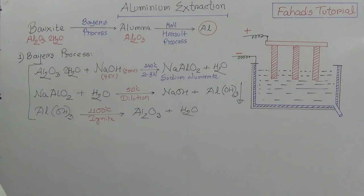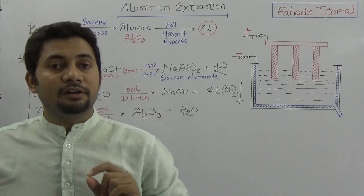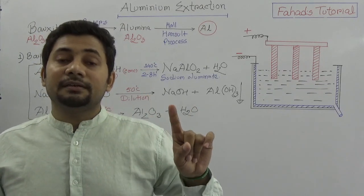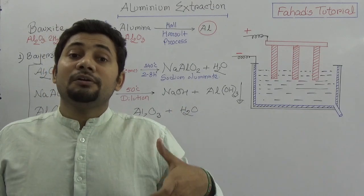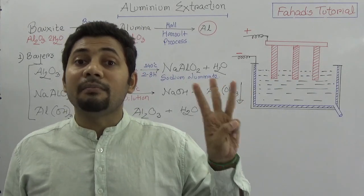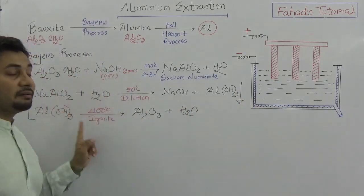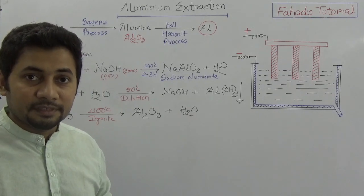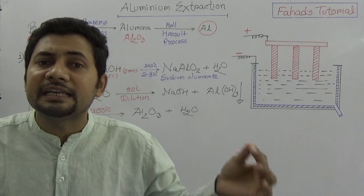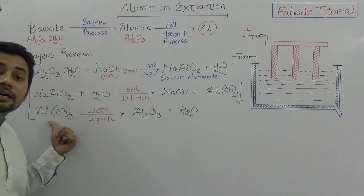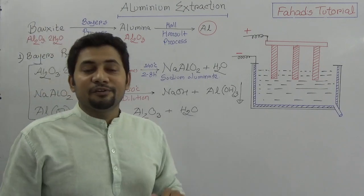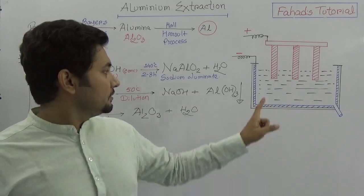This completes the Bayer's process or Bayer's method. Those who watched my first tutorial will recall that in the five steps of metal extraction, initial purification — condensation of ores — can be done in four ways, including hydrolytic, flotation, and magnetic separation methods. For aluminium, the chemical method is used. The aluminium hydroxide is ignited at 1100°C to give alumina, and then from alumina we extract aluminium through electrolysis.